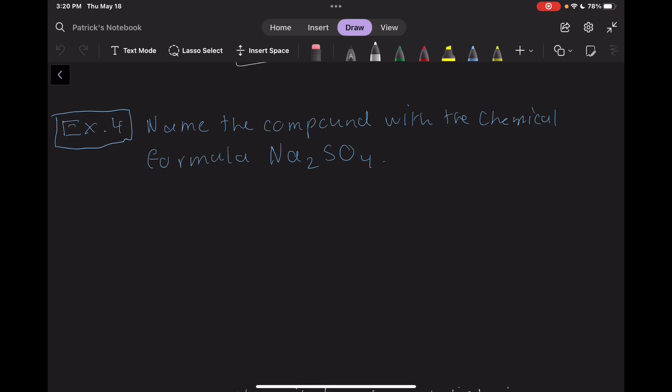Last one. Example 4 is a bit different. Name the compound with the chemical formula Na2SO4. Na is the element symbol for sodium. The SO4 represents the chemical formula for the sulfate polyatomic ion. The name of this compound is sodium sulfate.